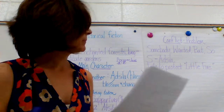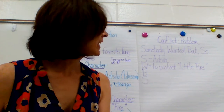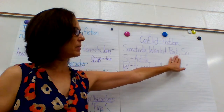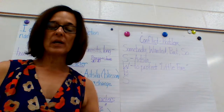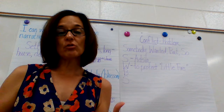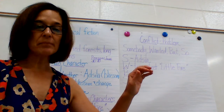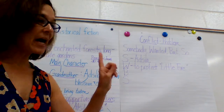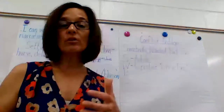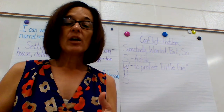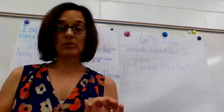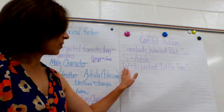I think of it this way: I can use somebody wanted, but so. My somebody is going to be my main character, and that's the grandmother. Her name is Adsela, and I remembered that one of the things she wanted was to protect her family. So I'm going to be specific — she wants to protect little Fire, the two-year-old.